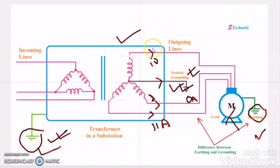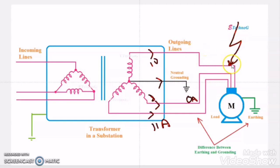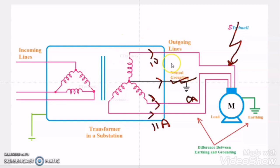Now let us take a faulty case. Suppose during a lightning strike on the distribution network, there will be a huge current in the secondary winding of the transformer. At that time the huge current due to the lightning strike will discharge through the ground conductor. So whether the system is normal or faulty — due to unbalanced load or lightning surge or switching surge — the ground conductor is always active.